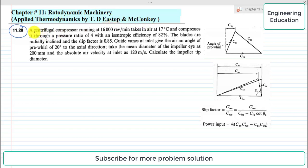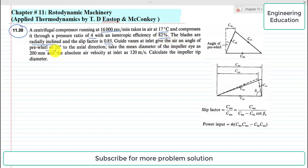This problem is about the centrifugal compressor. A centrifugal compressor running at 16,000 RPM takes in air at 17°C and compresses it through a pressure ratio of 4 with an isentropic efficiency of 82%. The blades are radially inclined and the slip factor is 0.85. Guide vanes at inlet give the air an angle of pre-whirl of 20° to the axial direction. The mean diameter of the impeller eye is 200 mm and the absolute air velocity at inlet is 120 m/s. Calculate the impeller tip diameter.